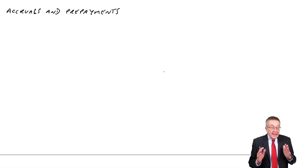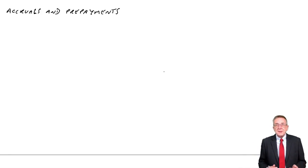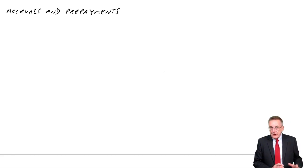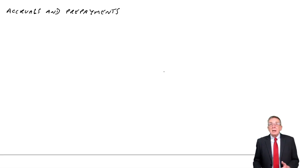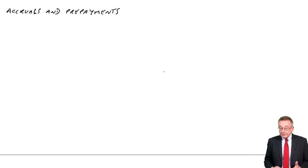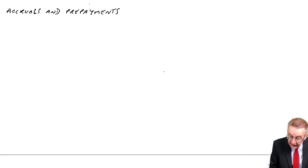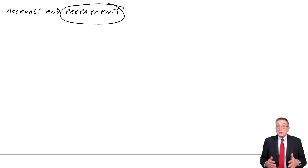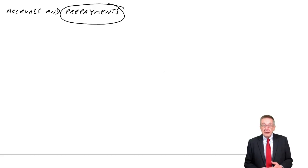At the end of the last lecture, I said when the accountant's preparing the financial statements, there are standardly four adjustments that need to be made. In this lecture, I'm going to go through the first of them, which is accruals and prepayments. To explain what they are, I'll use example one to explain what prepayments are and how we deal with them in the financial statements.